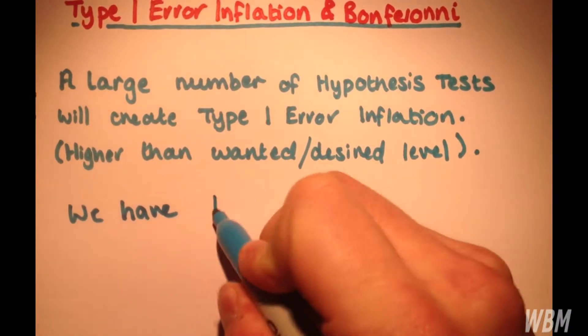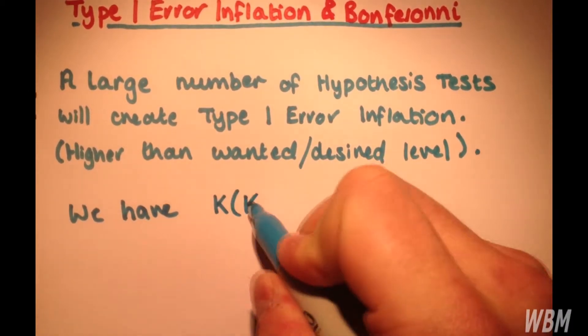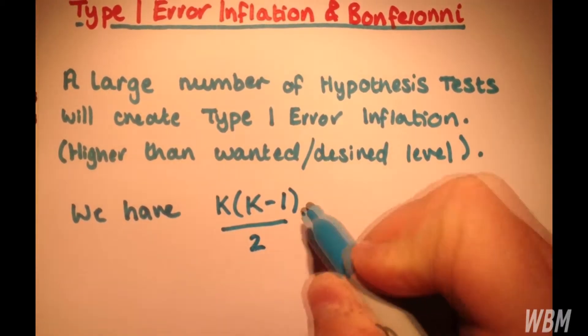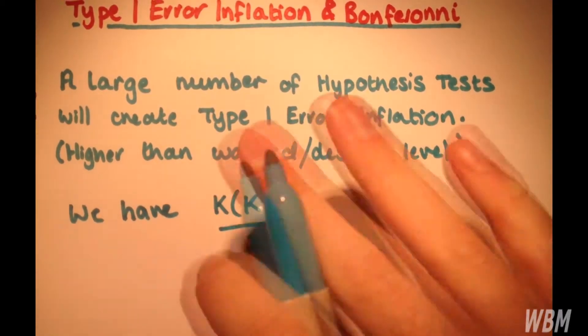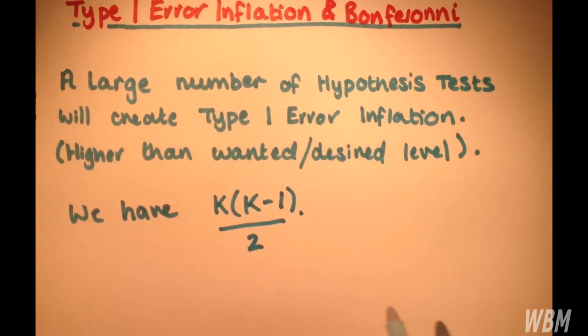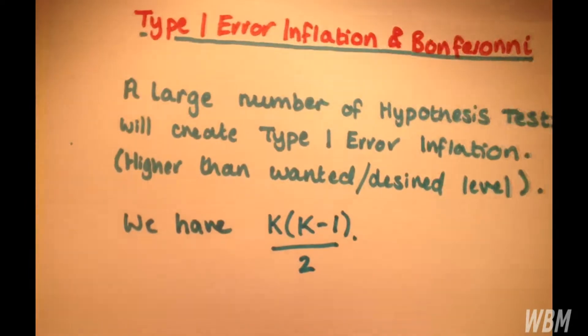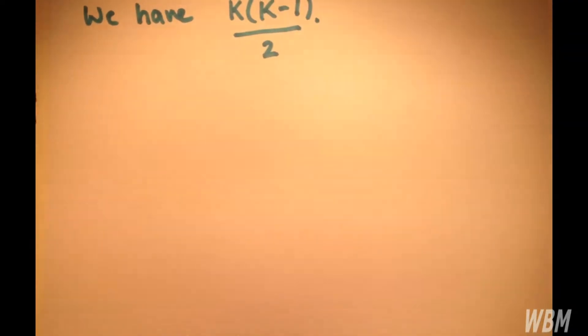k by k minus 1 over 2 tests to satisfy every pairing. So, what does this actually mean? Well, for example,